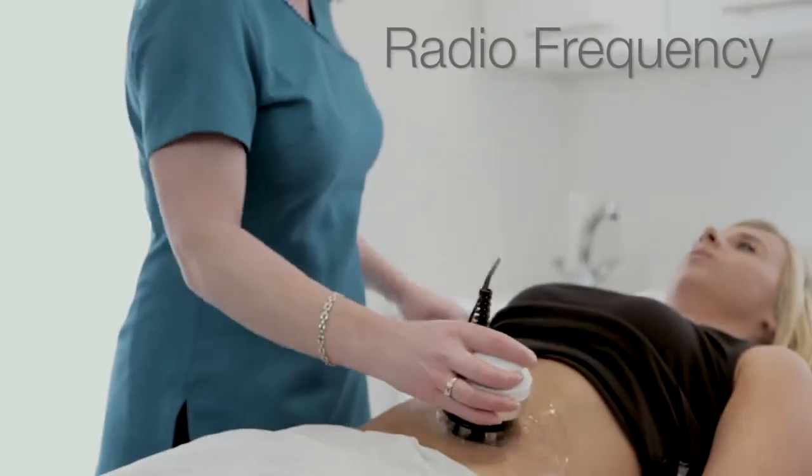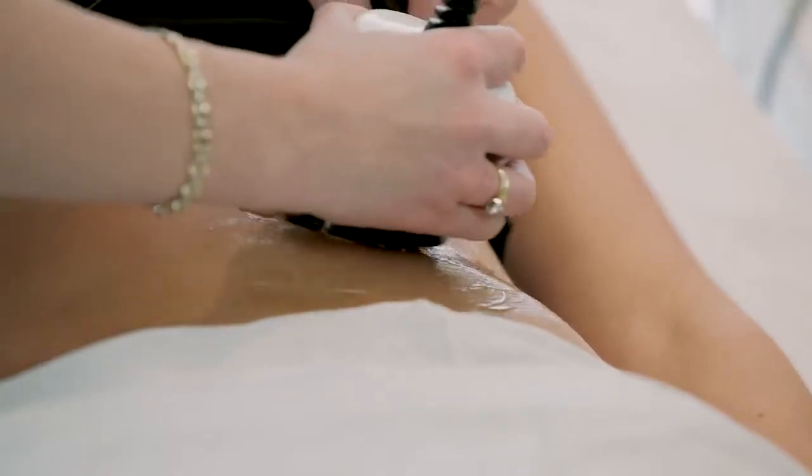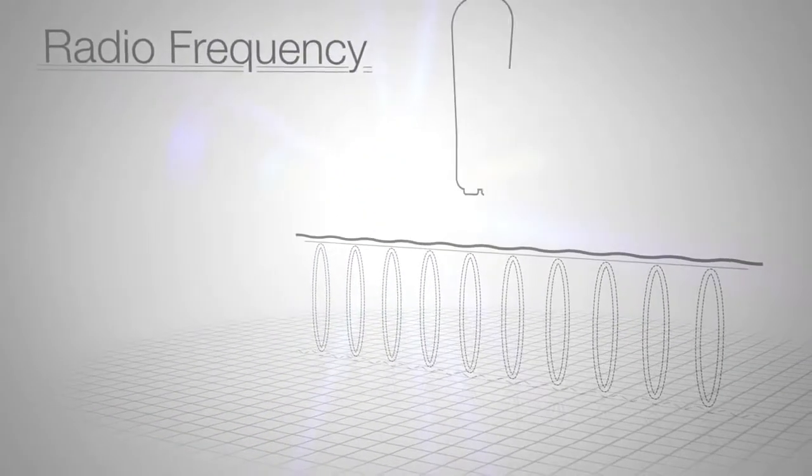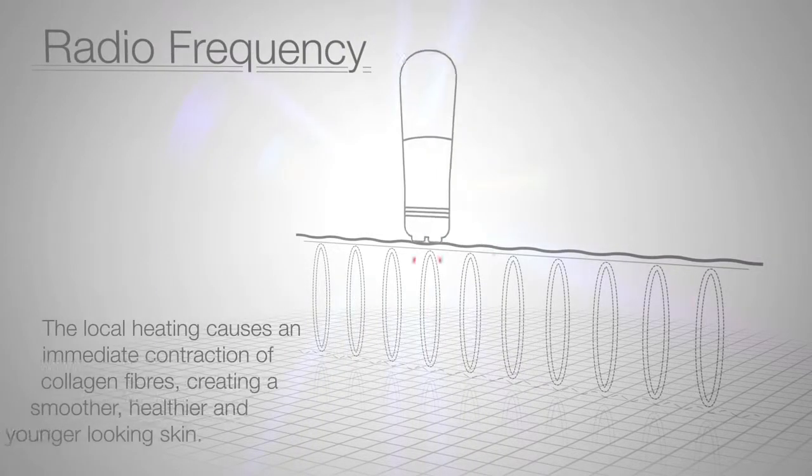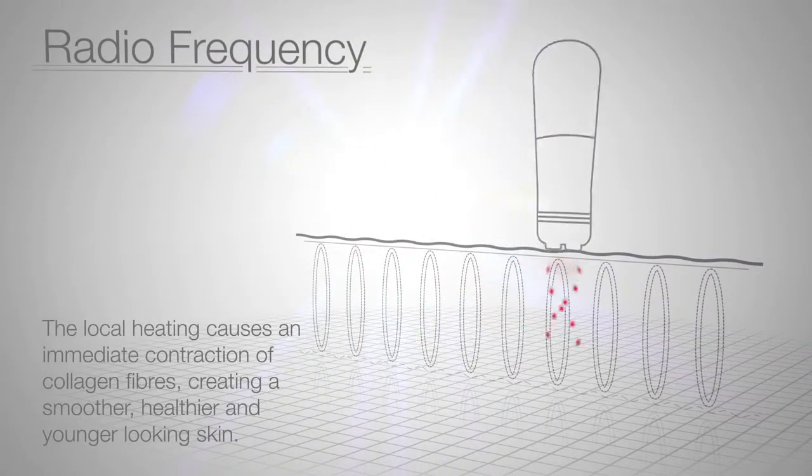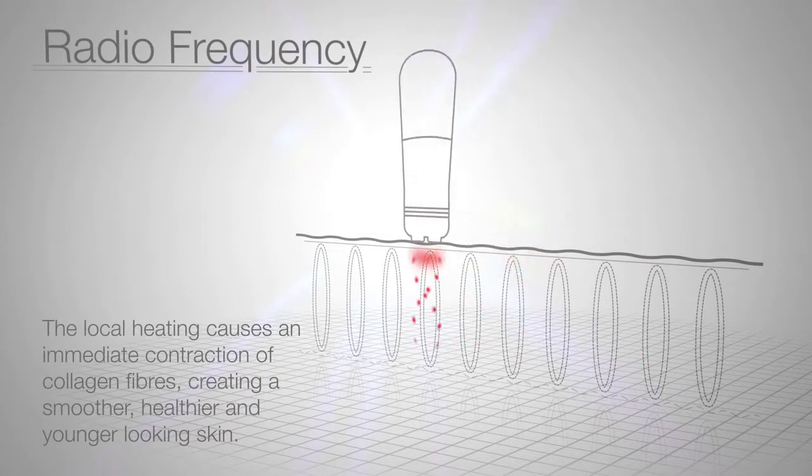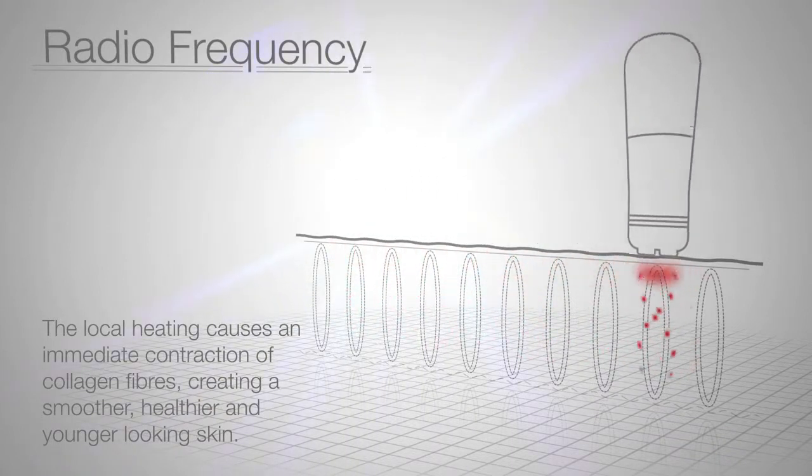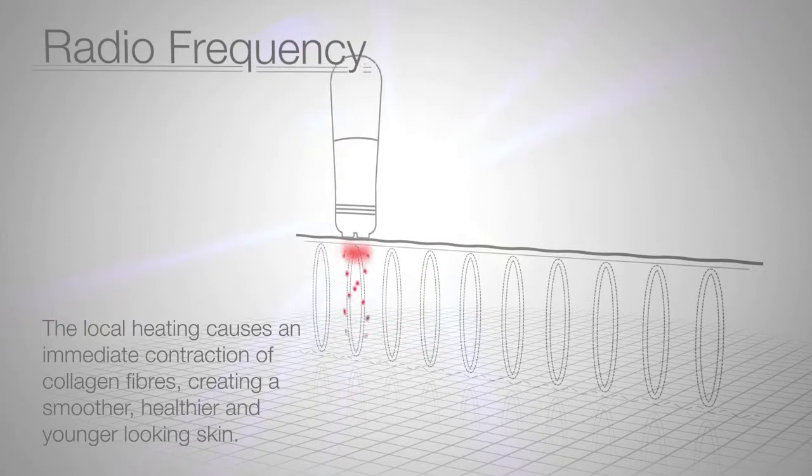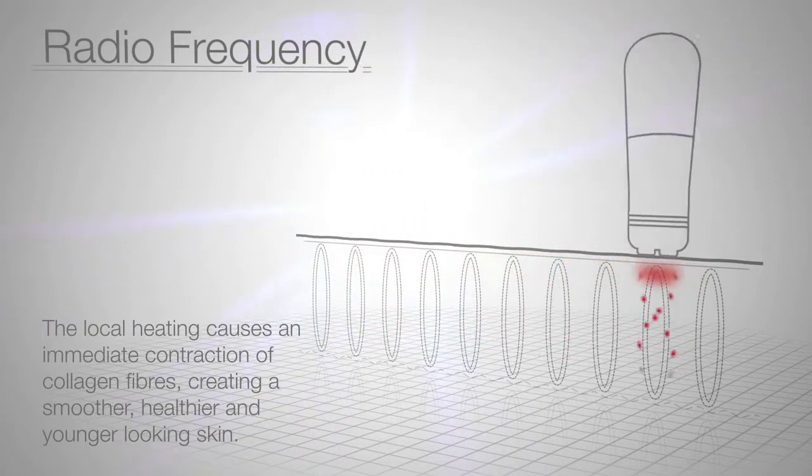Radio frequency is another important function of 3D LiPo. Using advanced tripolar technology, radio frequency enables not only skin tightening for the face, but also for the body. The concentration of collagen fibers and the regeneration of the collagen and elastin deposits tighten the skin layers, creating a smoother, healthier and younger looking skin.